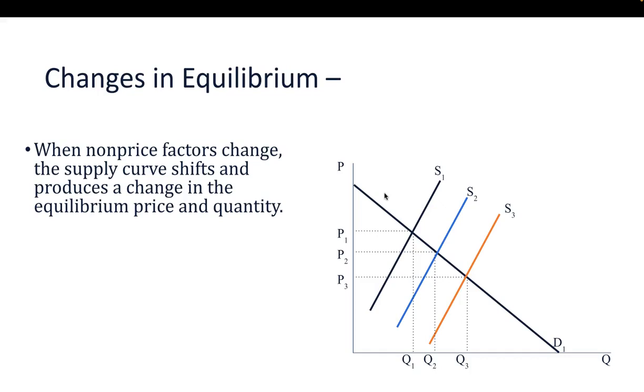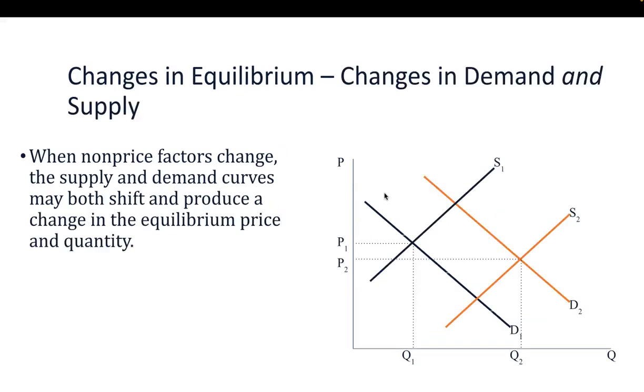What happens to the equilibrium price in that scenario? Equilibrium price comes down. Make sense? This is the scenario where the equilibrium price itself changes. When the non-price factors change, the equilibrium price changes. In this case, it went down. It could go in multiple directions depending on whether it's the demand curve or the supply curve it's moving and which direction it's moving.